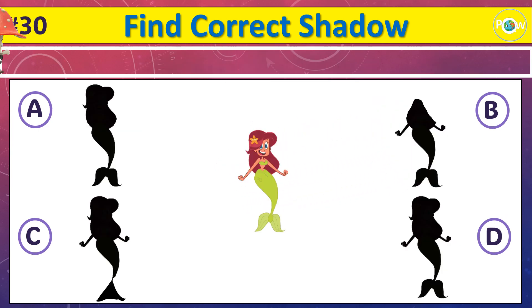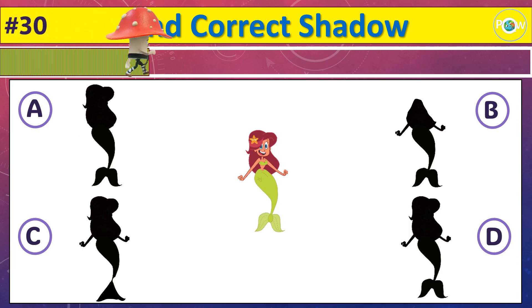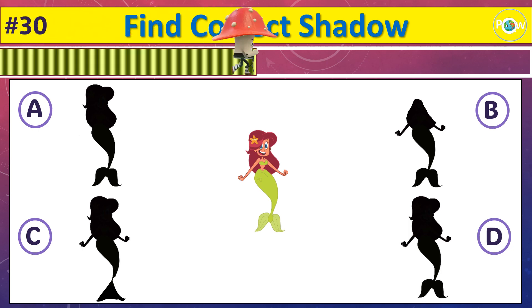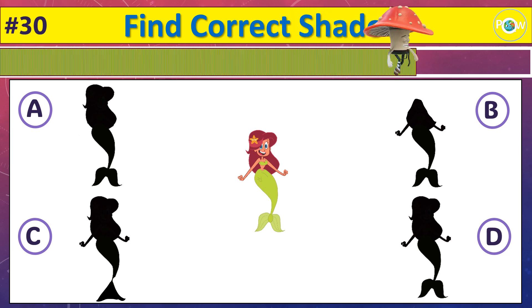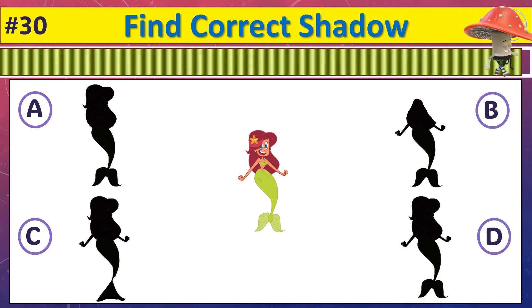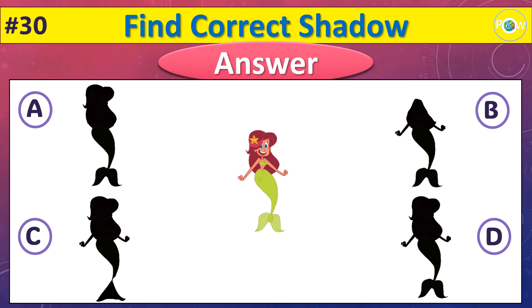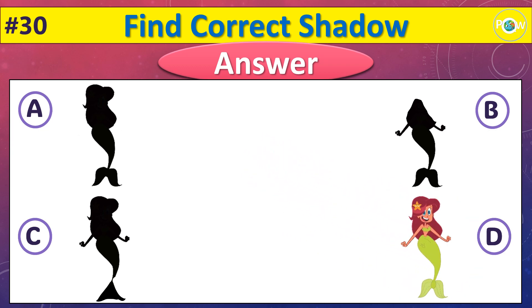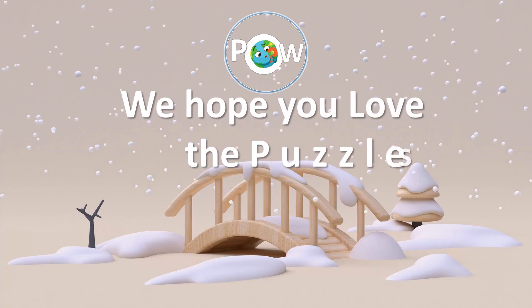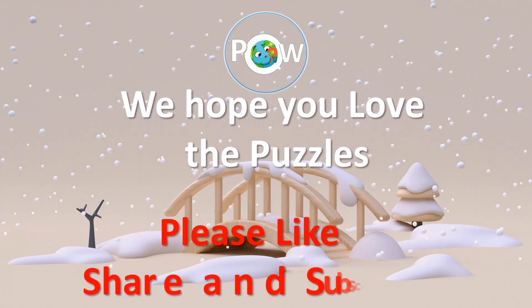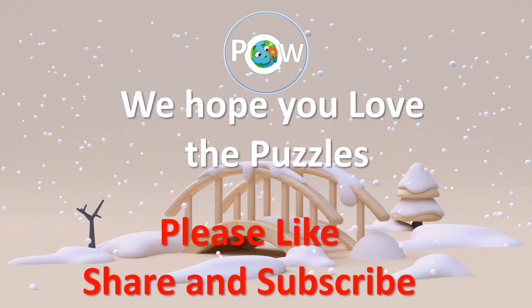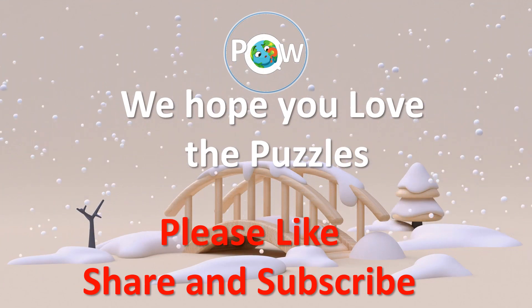Which is the correct shadow of this cartoon? And the correct shadow is C. And the correct shadow is D.